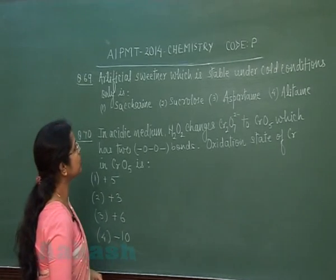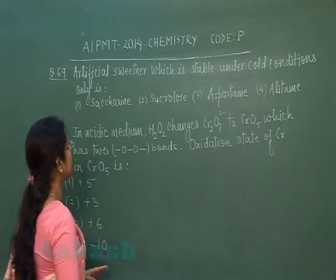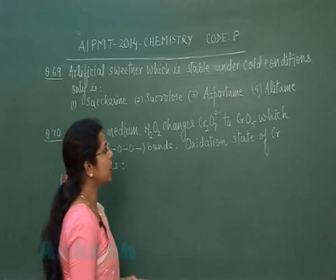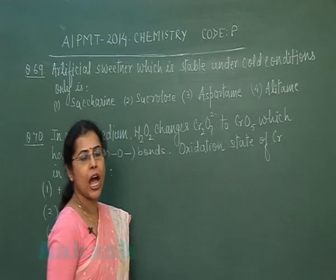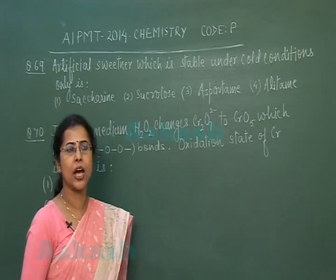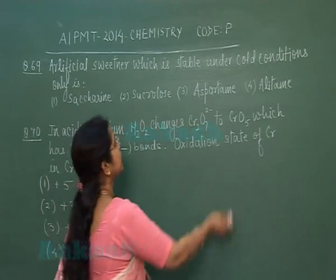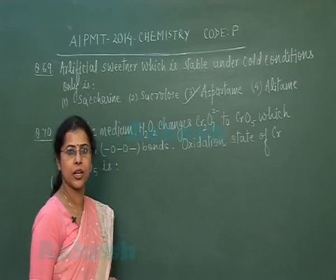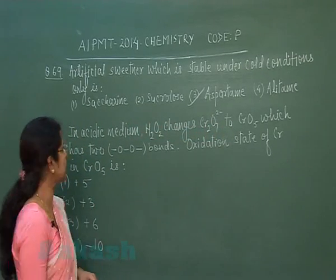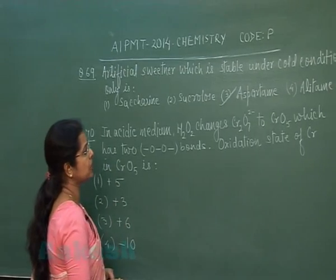Question number 69: The artificial sweetener which is stable under cold conditions only is: saccharine, sucralose, aspartame, or alitame. Among all four artificial sweeteners listed, only aspartame is stable in cold conditions; all others can be used in hot conditions.